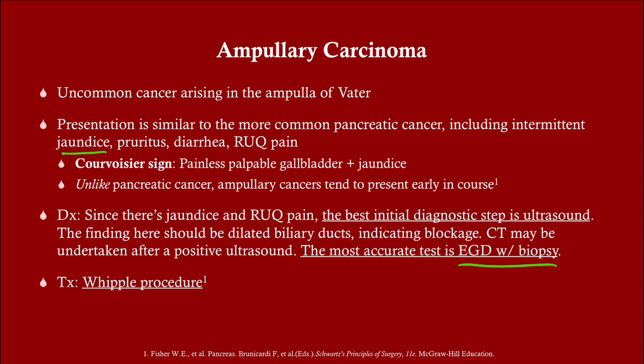Anytime you have jaundice you need to visualize the biliary tract, and your best initial step is an ultrasound. Also note that anytime there's a tumor in the biliary tract causing obstruction, that obstruction occurs very quickly — as opposed to stones, where the obstruction can occur gradually and these patients may have had some biliary colic allowing the gallbladder to fibrose.